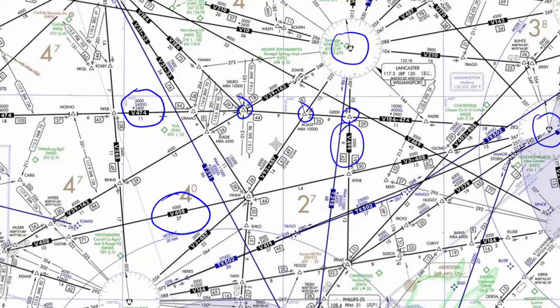When you look at a chart, the Victor airways — those with the V and the number — are all predicated on radio navigation, so they're all going to have some VOR associated with that airway. In the case of Victor 499 here, it's the Lancaster VOR. To identify various fixes as well, you're going to need to have multiple VORs tuned. So in this case of finding the Gears intersection here on Victor 499, we also need to have this VOR here tuned up for a crossing radial.